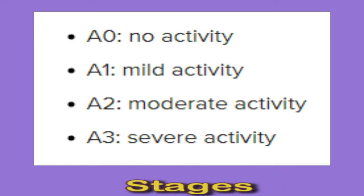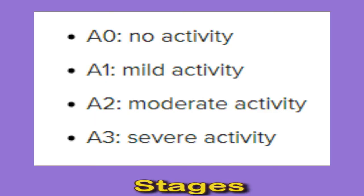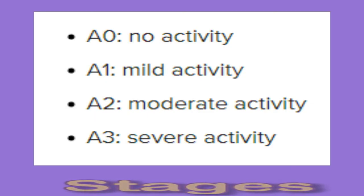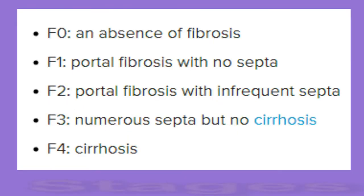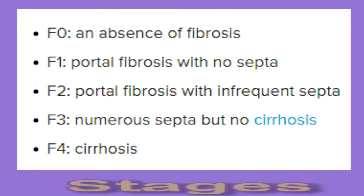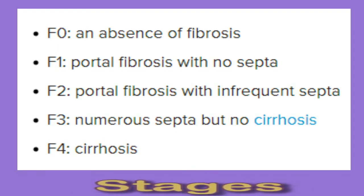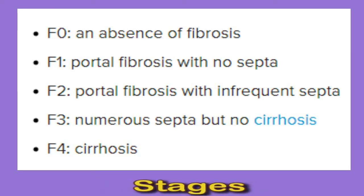The METAVIR scoring system rates the progression of fibrosis on a scale from A0 to A3: A0 no activity, A1 mild activity, A2 moderate activity, A3 severe activity. The METAVIR system also scores the level of fibrosis from F0 to F4: F0 absence of fibrosis, F1 portal fibrosis with no septa, F2 portal fibrosis with infrequent septa, F3 numerous septa but no cirrhosis, F4 cirrhosis.